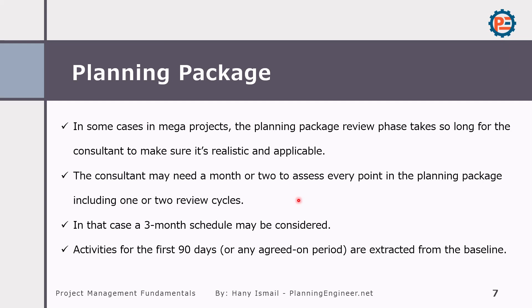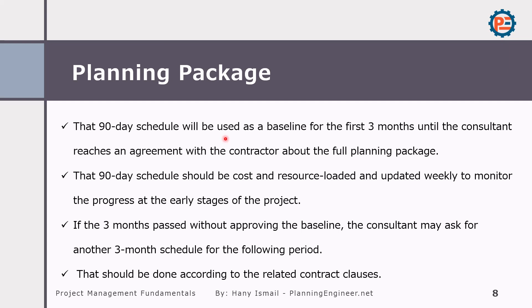In that case, we might take one or two months. We will keep monitoring the project by using a three-month schedule or 90-day schedule. This is a very common practice to keep an eye on the project while we are finalizing the planning package. The 90-day schedule or any agreed period according to your contract is a small portion of the scope of work which will be done in the first three months. Then we keep monitoring it until we reach the final planning package.